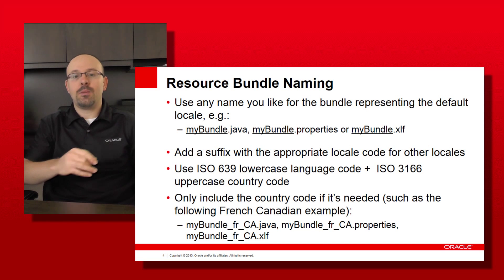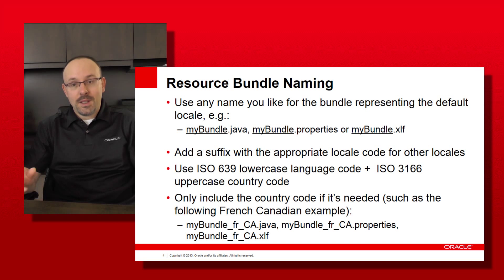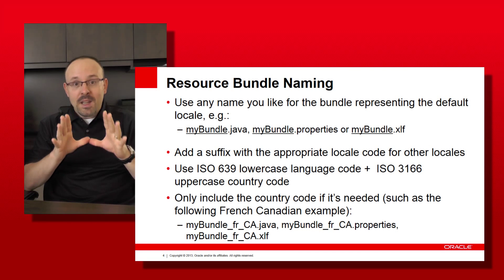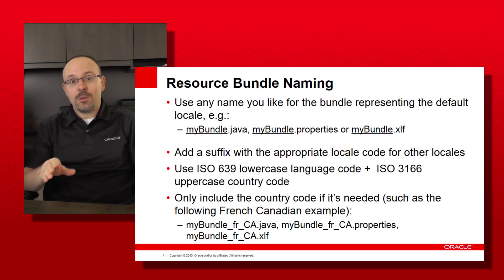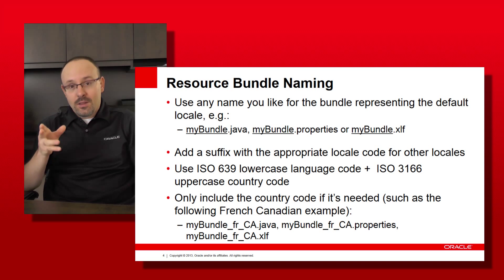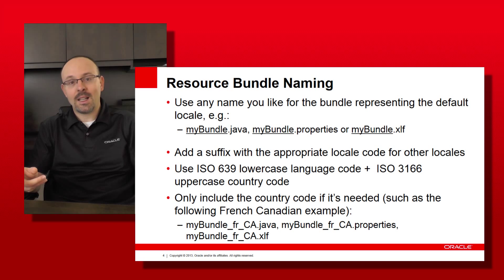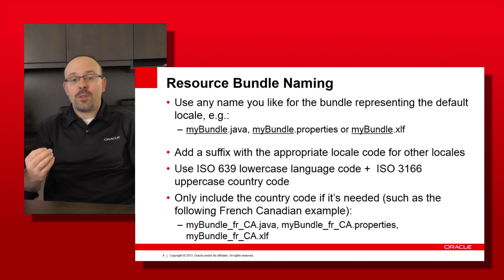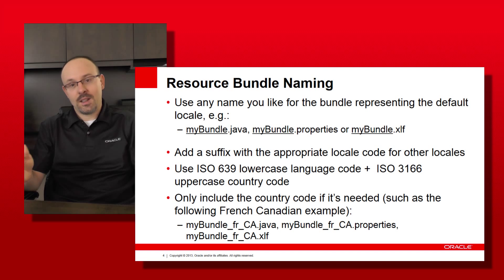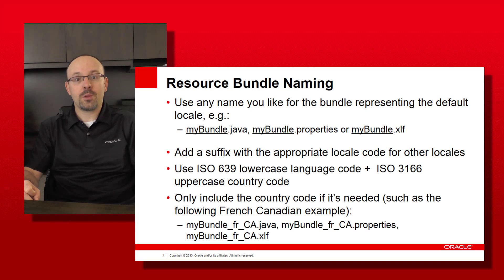As we've seen in previous episodes, a locale can be very detailed — it can be a language, a country, a variant, a region, etc. Depending on the target locale, you may need to specify all five possible components in the file name. For example, if I want to support Canadian French, the language code is FR and the country code is CA, so the Canadian French version of my default bundle will be myBundle_FR_CA with the appropriate file extension for the resource bundle type being used.